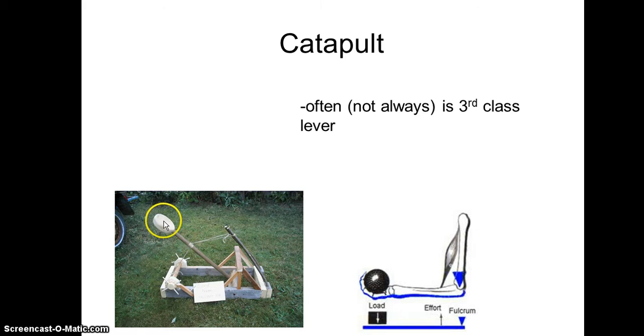The fulcrum, or the pivot point, is down here. And they're using this stick as a spring, and it's going to pull on the arm right there. So this becomes a third class lever because in the center you have the resistance.